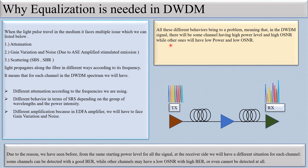All these different behaviors bring a problem: in the DWDM signal there will be some channels having high power level and high OSNR, and some channels with low power and low SNR at the receiver. It doesn't matter if we transmit the same power for all channels — at the receiver end their OSNR, BER, and received power will differ. That is why equalization is required. The meaning of equalization is that at the receiver side the power of all different wavelengths should be the same.